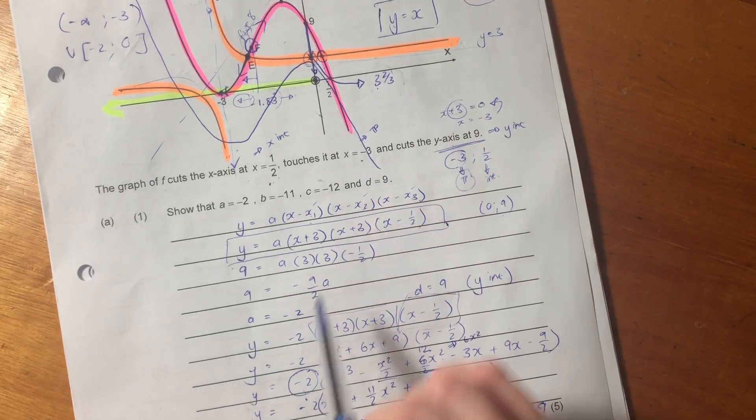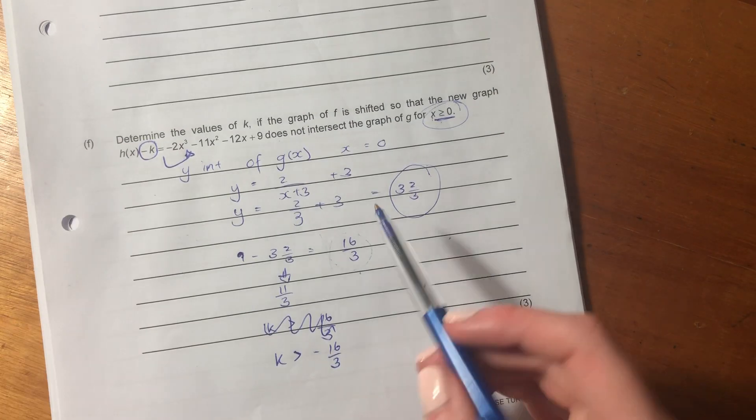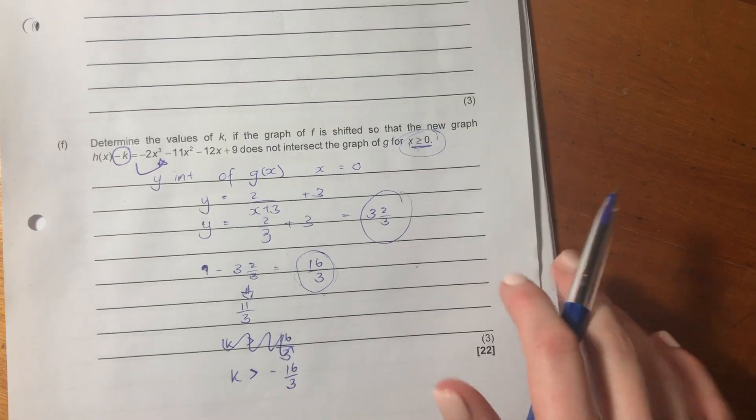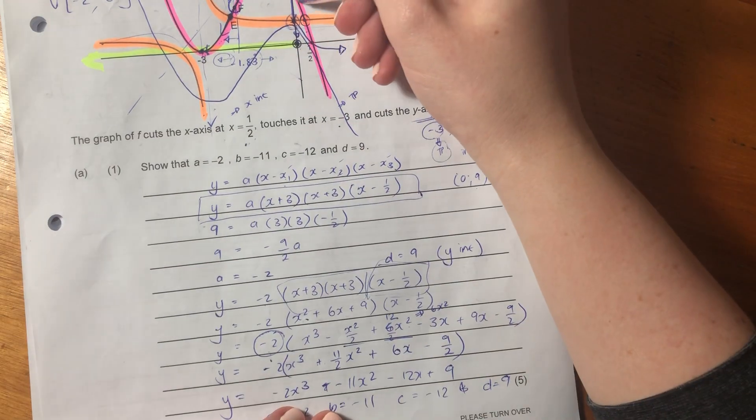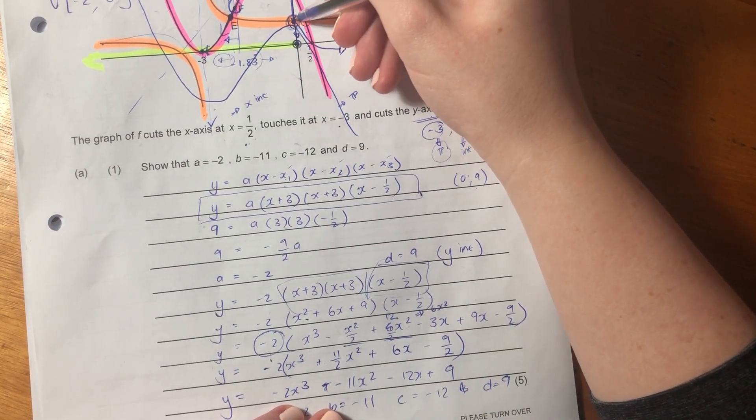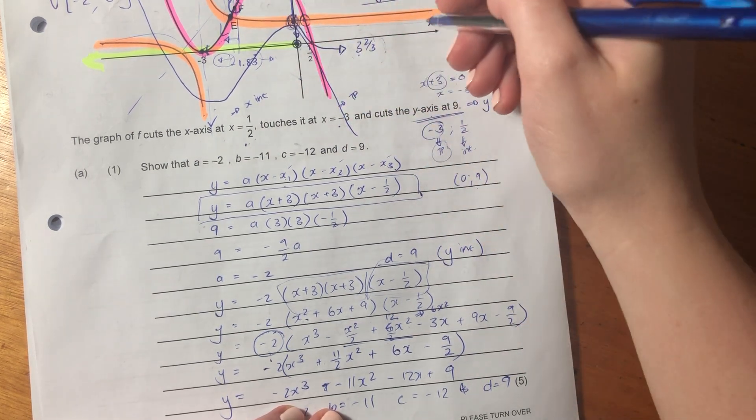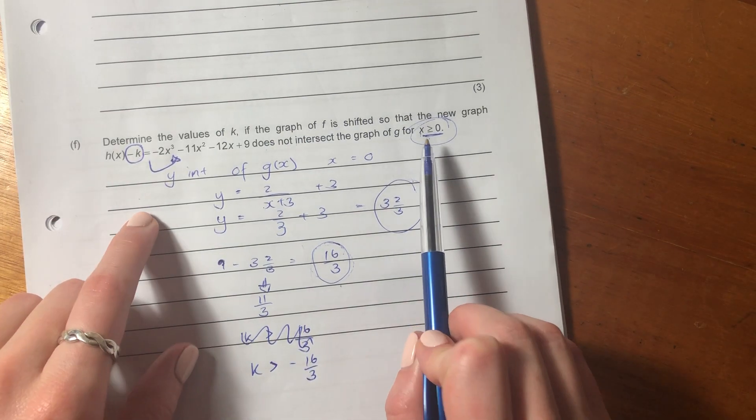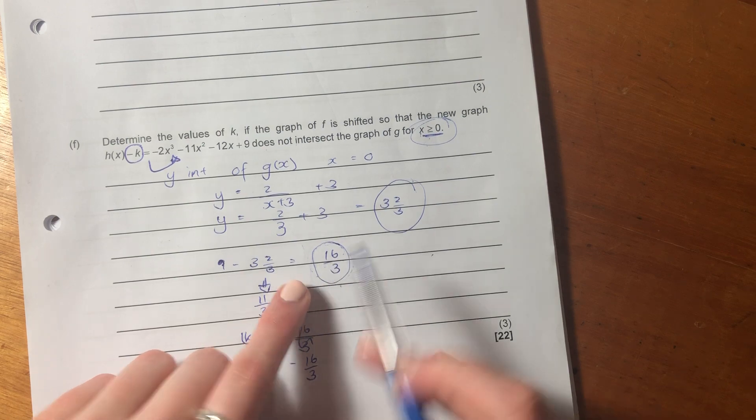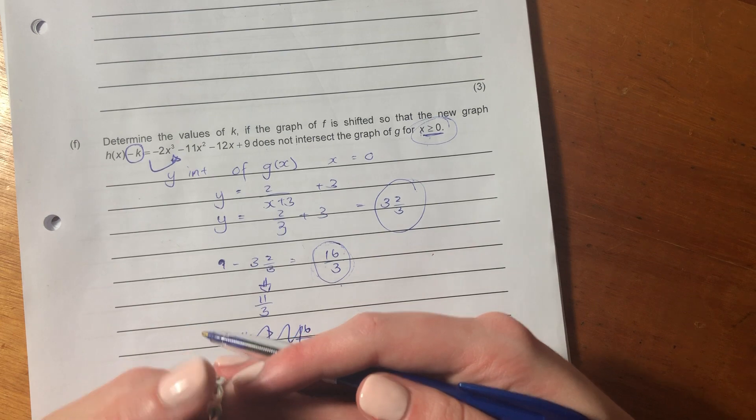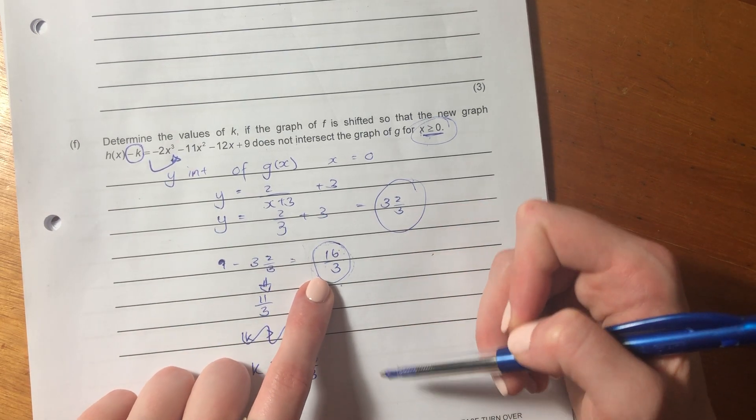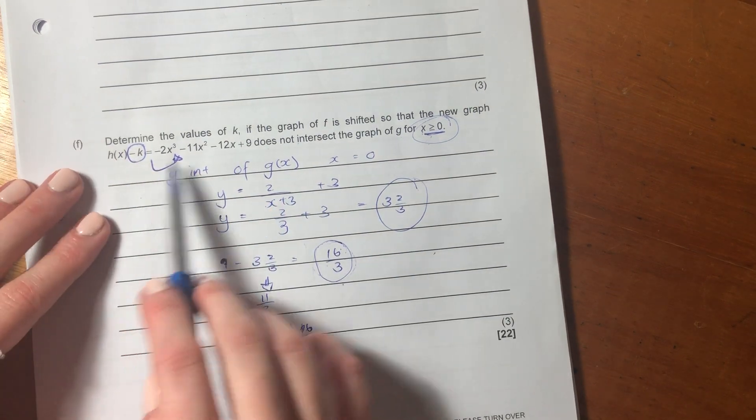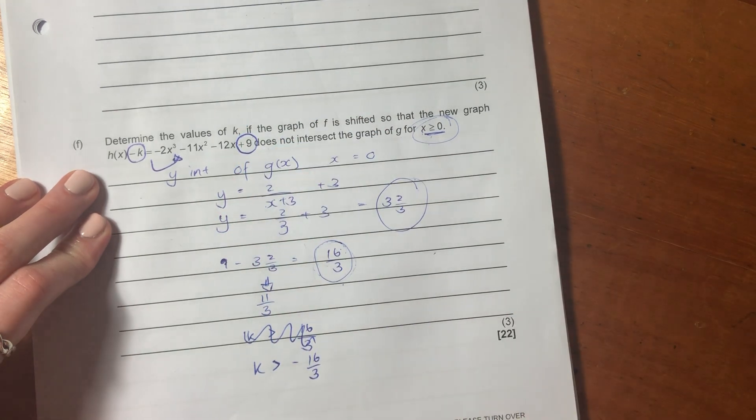So what we want to do is we want to figure out what is the minimum amount we can move it down so that from X equals zero onwards, it never intersects with G of X. So what I'm going to do is I'm going to say, let's just find out what the difference is between the intercept, the Y intercept of the cubic or the pink and the Y intercept of the orange. So I'm saying let's first find the Y intercept of the orange. Remember, the orange is the hyperbola. I make X equal to zero, and we see that its Y value there is three and two-thirds. So we know that we're going to have to shift our intercept down 16 over 3 at least just to get to the same intercept as this orange graph, as the hyperbola, which is G of X.